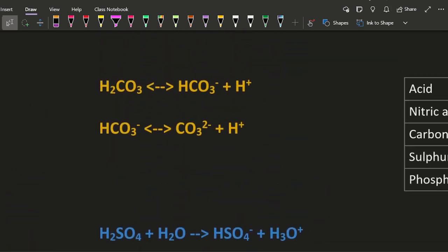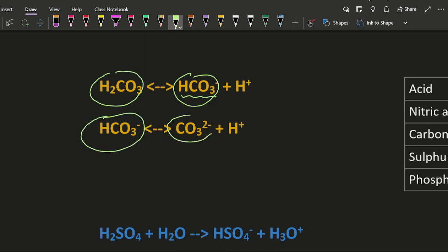There's the hydrogen carbonate. They could ask you for a conjugate acid-base pair of hydrogen carbonate. It could be this paired with that, or the hydrogen carbonate again paired with the carbonate ion. So there are two possible conjugate acid-base pairs for hydrogen carbonate: add an H+, take off an H+.